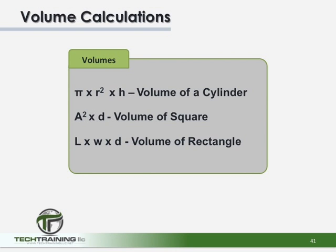Earthwork also includes volumes. To calculate any of these as a volume: the volume of a cylinder is pi r squared times the height; the volume of a square is any side squared multiplied by the depth; and the volume of a rectangle is length times width times the depth.